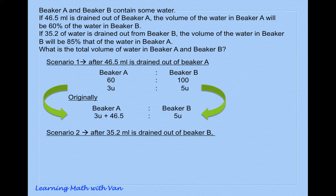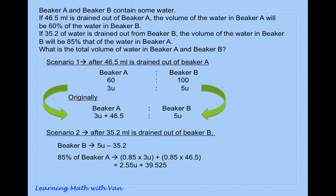we take 5 units take away 35.2 ml, which is equal to 85% that of the water in beaker A. So what is 85% of the water in beaker A? Remember when we do this, we have to take 85% of 3U and 85% of 46.5. So that will give us 2.55 units plus 39.525 ml.